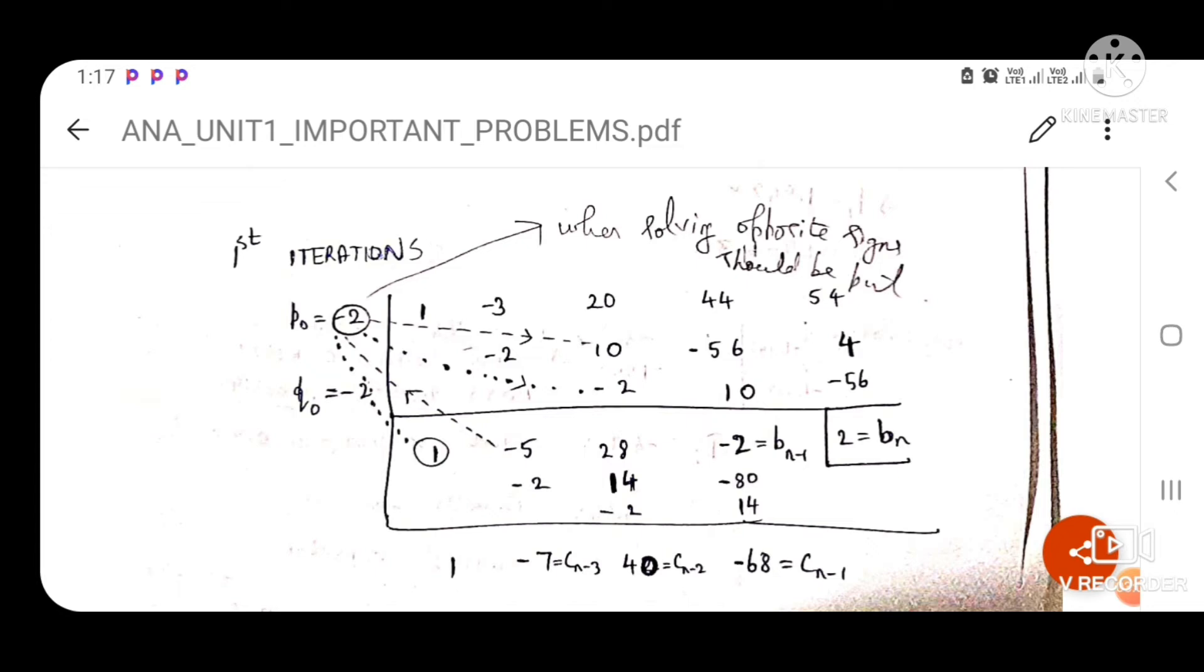You get the value minus 7. Minus 7 into minus 2 gives you positive value 14. Then 1 into minus 2 will give you minus 2. Actually there's no number before minus 1 in the first case of P naught and Q naught, that's why we haven't put anything under minus 2. So 1 into minus 2 gives minus 2 which then add together gives 40. In the same way, 40 into minus 2 gives minus 80, and minus minus gives plus. Thus we get these 3 values: 1, minus 7, 40, and minus 68.